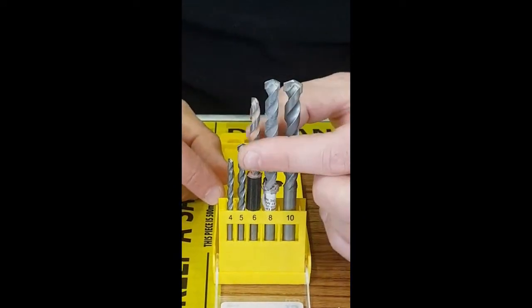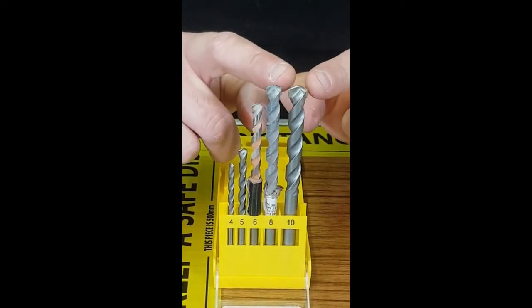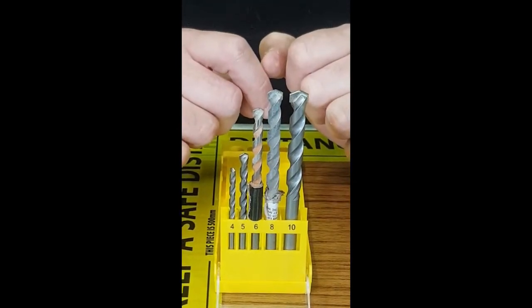Moving on, these are for masonry. You'll notice on the top of them there is a distinct hammerhead shape where it sticks out. They are for concrete, stone, brick, and masonry.